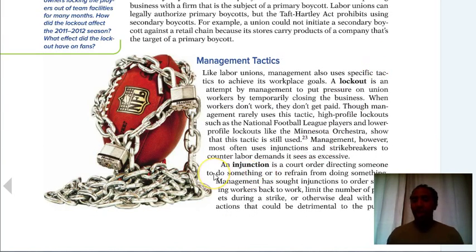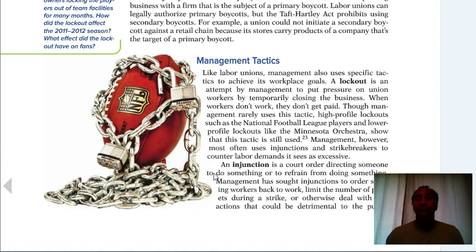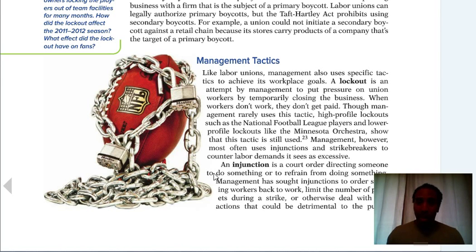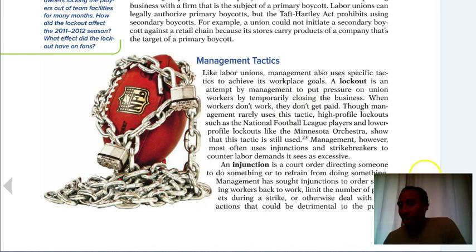An injunction is a court order directing someone to do something or to refrain from doing something. For example, in the NFL, a player named Ironhead Hayward's son was wearing eye black in memory of his father who passed away due to cancer, and the NFL said you can't do that because it's written into their contracts and bylaws.